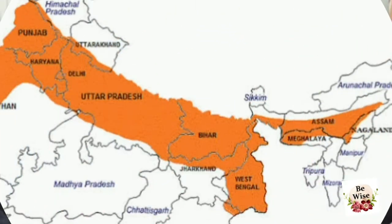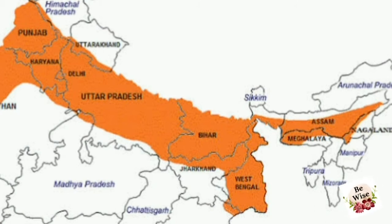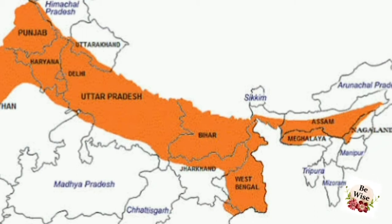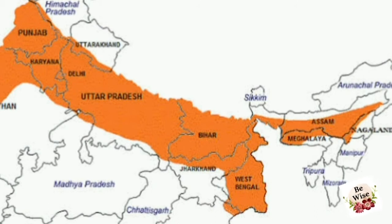The Northern Plain mainly consists of the states of Punjab, Haryana, Delhi, Uttar Pradesh, Bihar, and West Bengal. A small part of Assam and Tripura is also included. However, Delhi is not a state — it is a Union Territory.